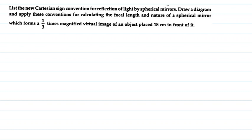Hello everyone, hope you are doing well. I am going to explain this question in this video. The question says: list the new Cartesian sign conventions for reflection of light by spherical mirrors. Draw a diagram and apply these conventions for calculating the focal length and nature of a spherical mirror which forms a one-third times magnified virtual image of an object placed eighteen centimeters in front of it.